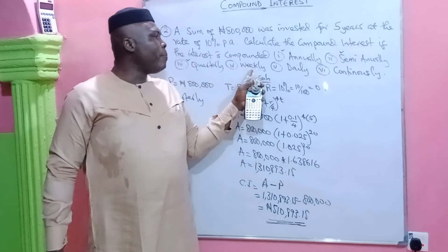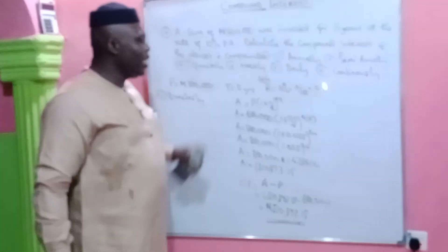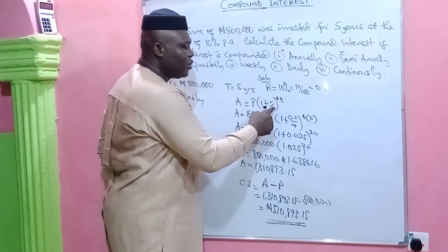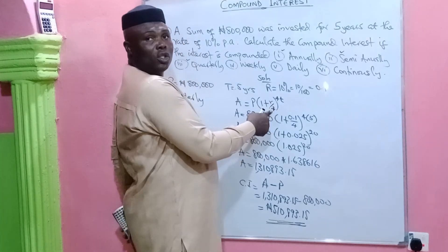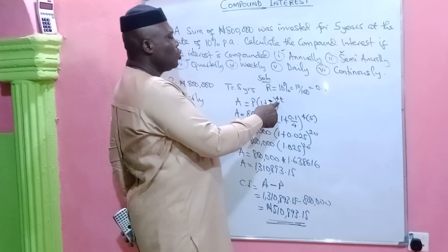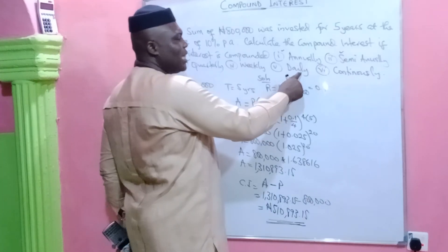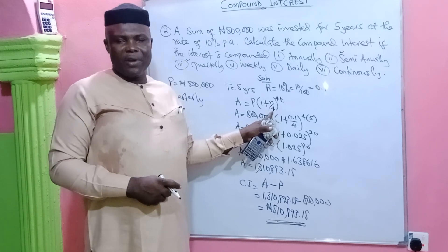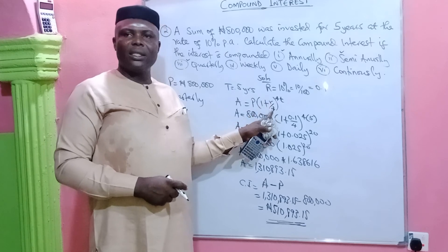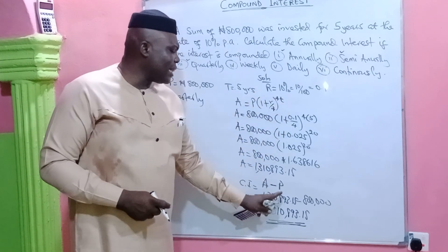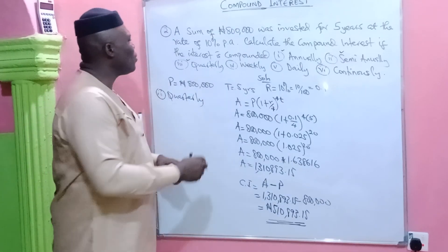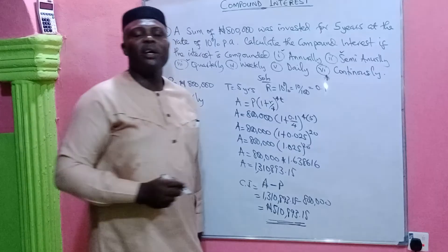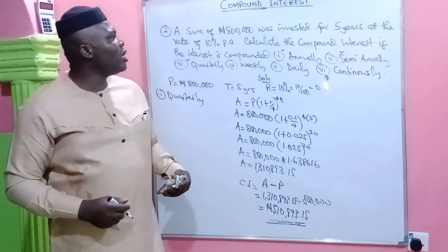What I want you to now try is interest compounded weekly and daily. For weekly, all you need to do is divide the rate by 52, because 52 weeks makes a year, and multiply the time by 52. For daily, divide the rate by 365 and multiply the time by 365, because you compound interest once every day and there are 365 days in a year. Everything else is exactly the same. It is only continuous compounding that has a different formula, which I will show you in our next slide.